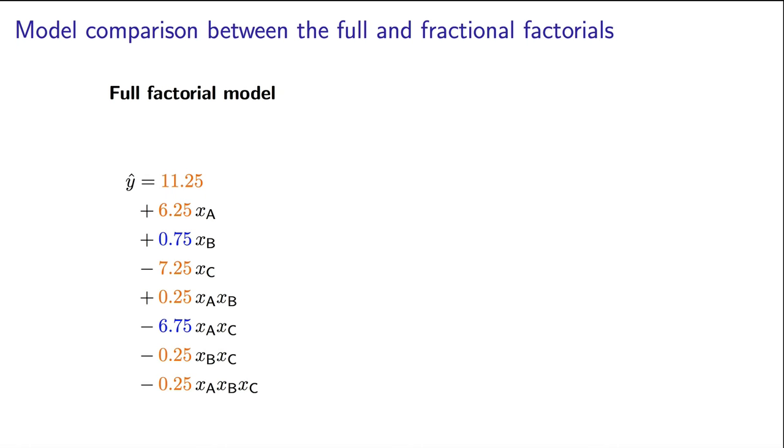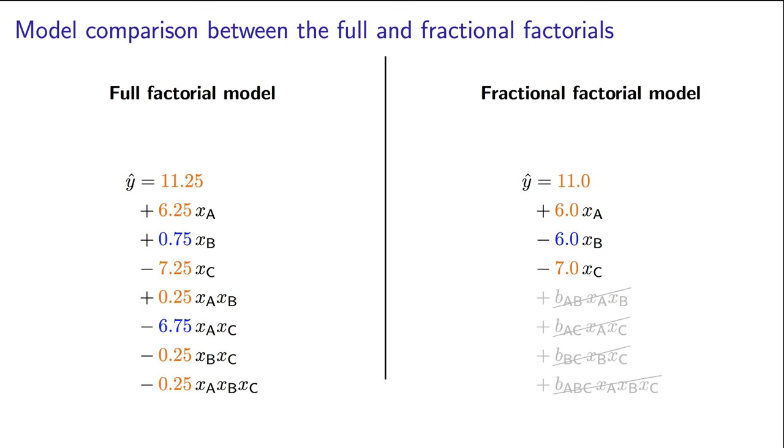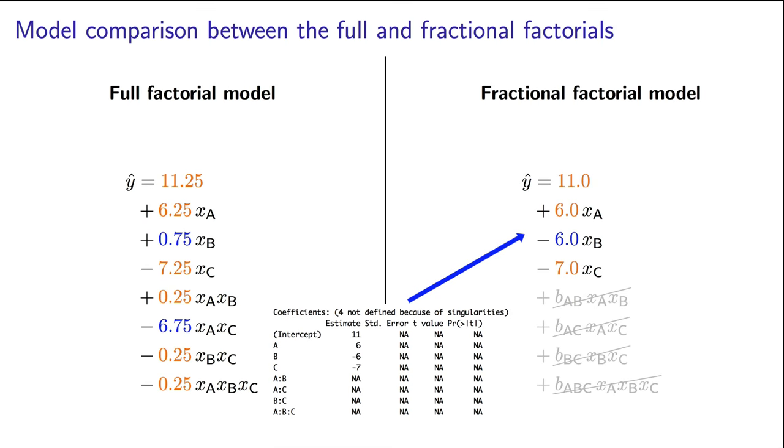Let me assume we've done all 8 experiments. And let me compare that to the case where we've only done 4 of the experiments. We're going to write out the 2 prediction models side by side so that you can see the differences between them.